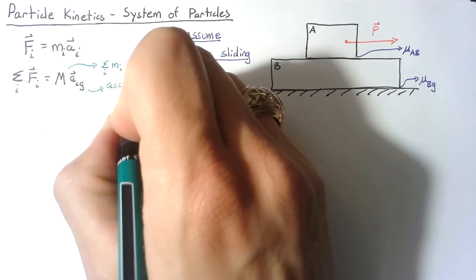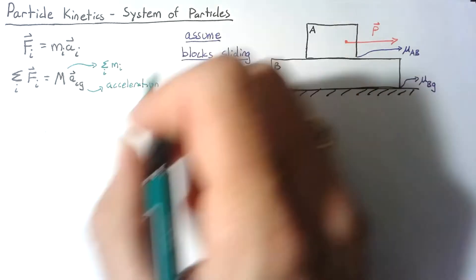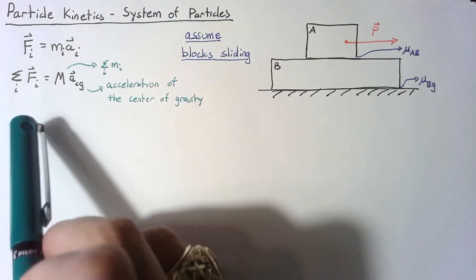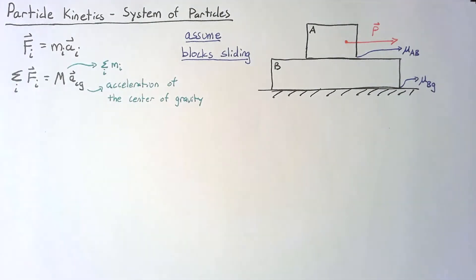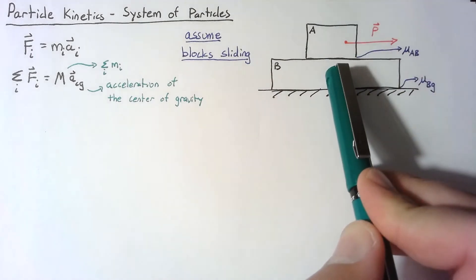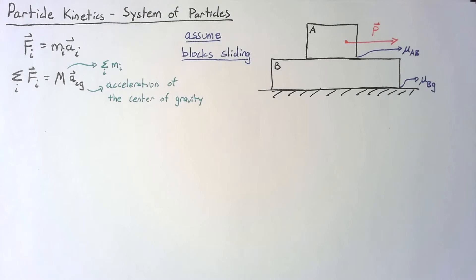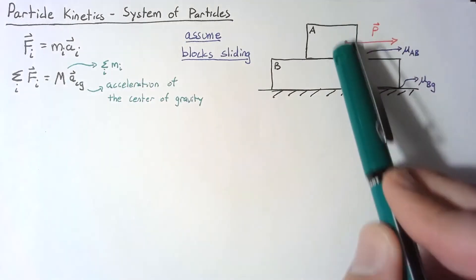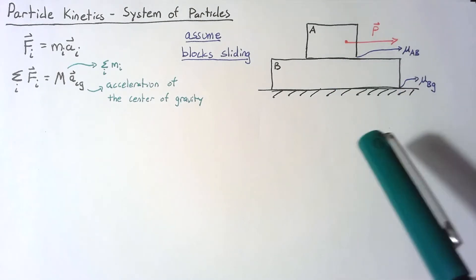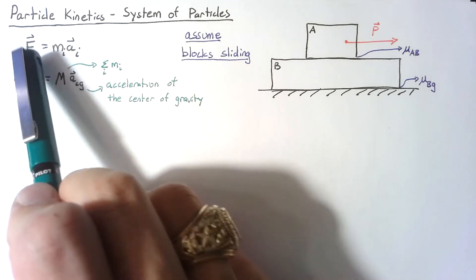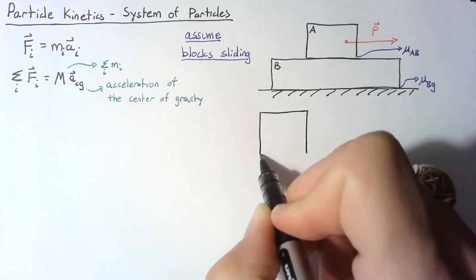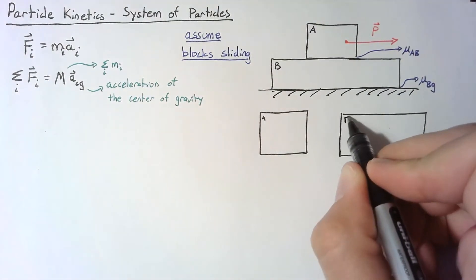The acceleration of the center of gravity is also called the center of mass. This equation is not going to be useful in our situation. If both blocks were moving together — say they weren't sliding — we would be interested in the acceleration of the center of gravity because the acceleration would be the same for both blocks. But for this case, we're interested in looking at the individual blocks, so I'm going to draw two separate free body diagrams, one for block A and one for block B.